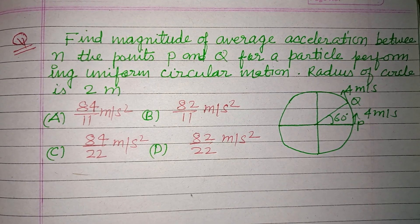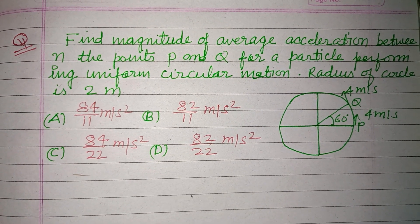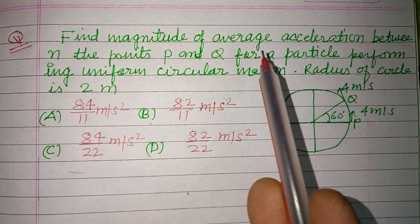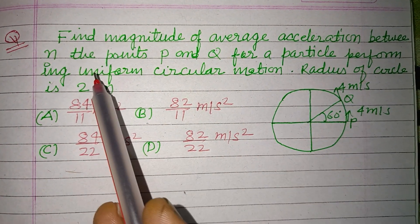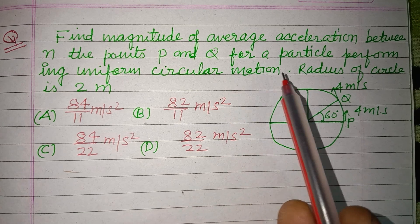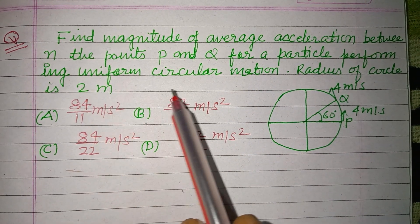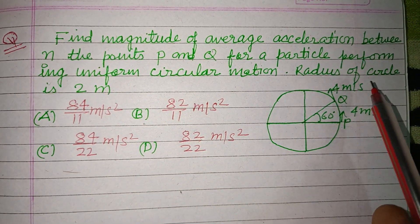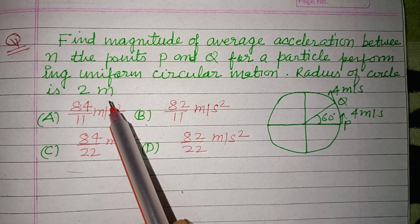Hello viewers, warm welcome to this YouTube channel. Question is, find the magnitude of average acceleration between the point P and Q for a particle performing uniform circular motion. Radius of circle is 2 meter.